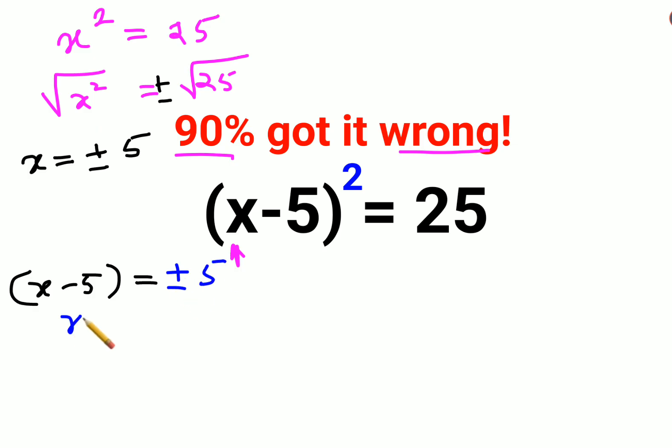So now I can say either the value of x minus 5 is positive 5, or I can say the value of x minus 5 equals minus 5.